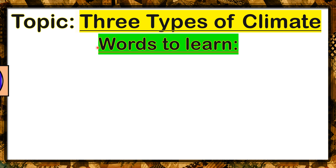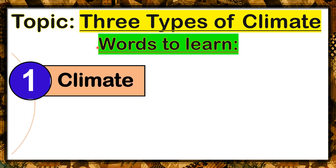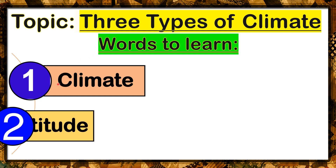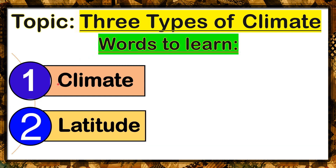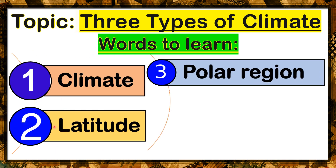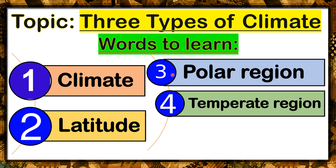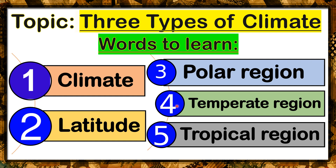Let's start reading. Number one, climate. Number two, latitude. Number three, polar region. Number four, temperate region. And number five, tropical region.